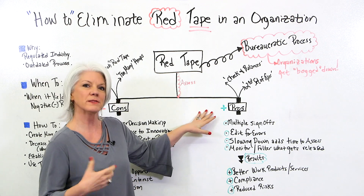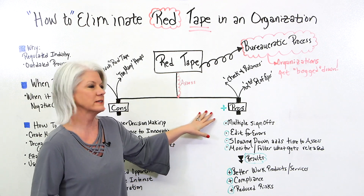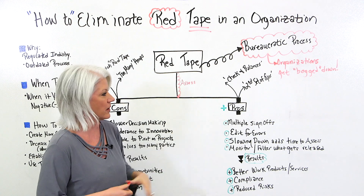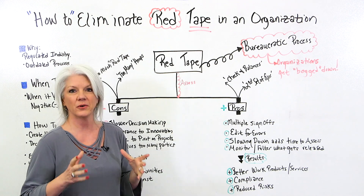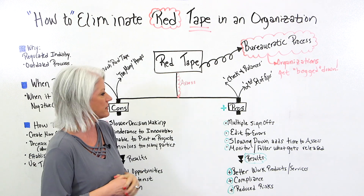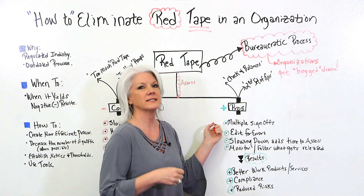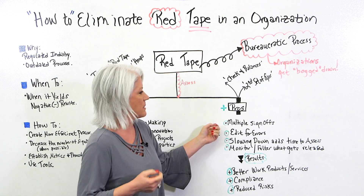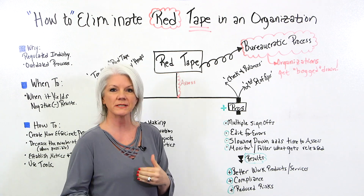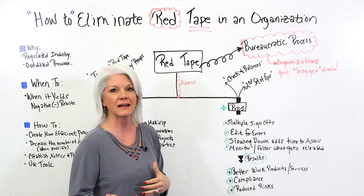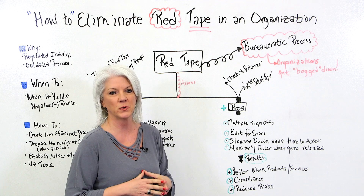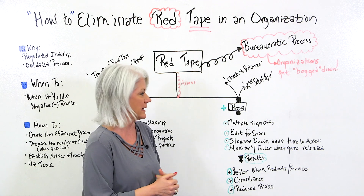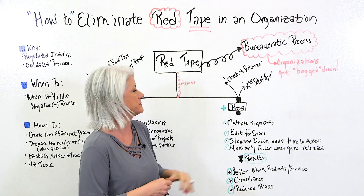So let's talk about the pros, though. There's some good red tape that organizations often implement. For instance, multiple sign-offs. Having multiple sign-offs is a check and balance to ensure things aren't dropped and illegal things aren't done.